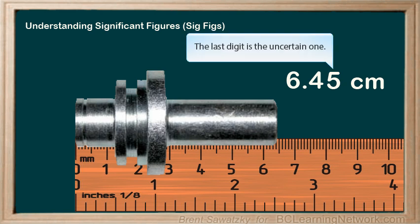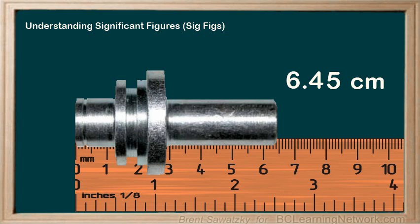A standard way of measuring is that we make a bit of a guess on that last digit. It does add value to include that digit, but we have to recognize that it is uncertain. Measuring any further wouldn't make any sense as it would be a complete guess. We're satisfied with one uncertain digit that tells us that the part is six point four five plus or minus a couple hundredths of a centimeter. We know the part is between six point four three and six point four six for sure.